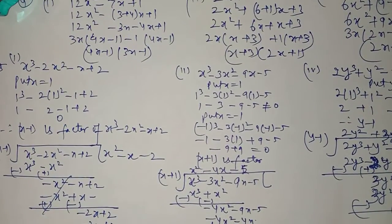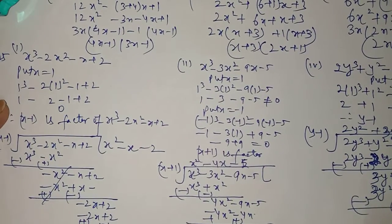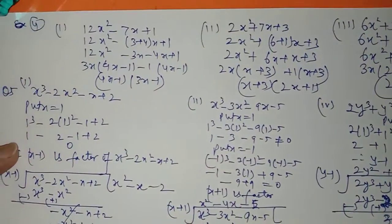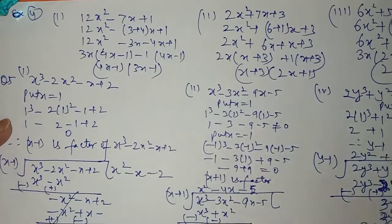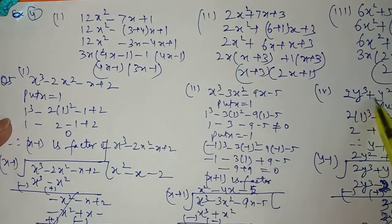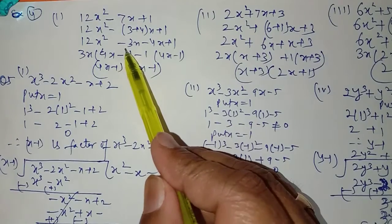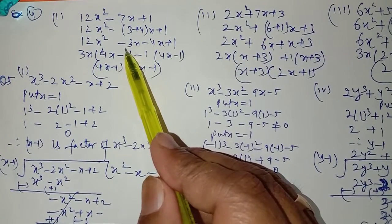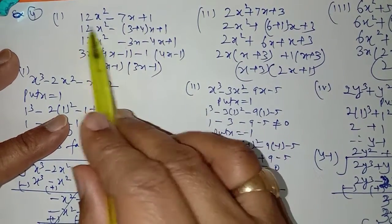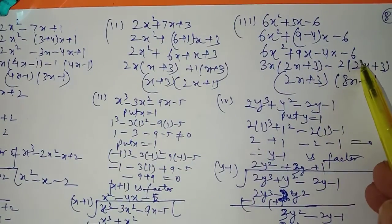Now in question 4 of this exercise, you have to factorize the given polynomials. This is the method of factorization by splitting the middle term, which you have also done in classes 7th and 8th. For a quadratic polynomial, you split the middle term. To do this, find two numbers whose product equals a × c (coefficient of x² times the constant), and whose sum equals b (coefficient of x).